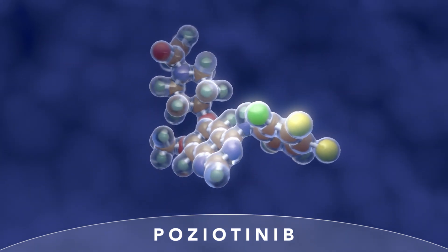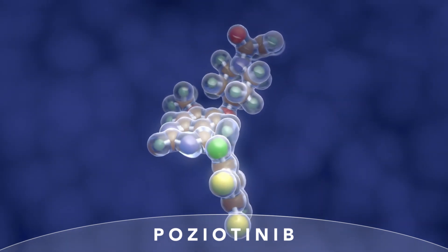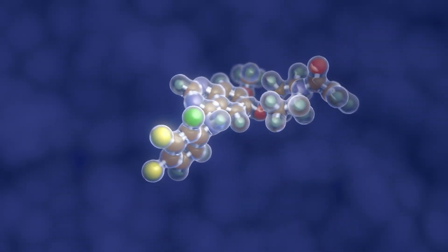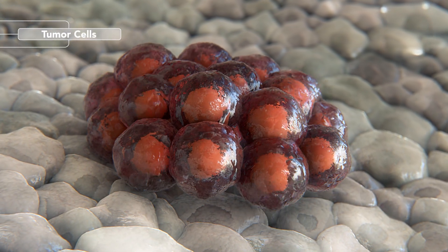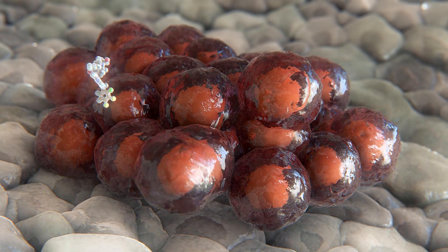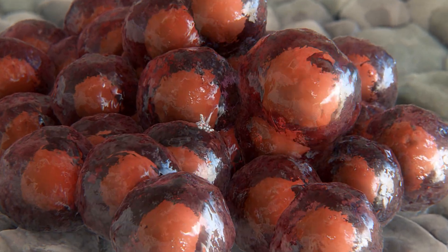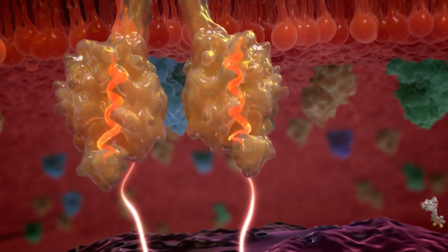Poseotinib is an investigational irreversible tyrosine kinase inhibitor that is small and flexible. Preclinical studies suggest that poseotinib can access the restricted binding pocket caused by these Exon 20 insertion mutations and may help inhibit its kinase activity.